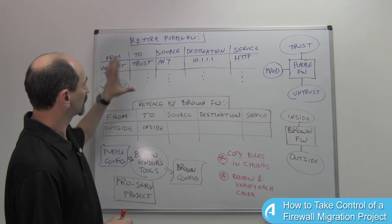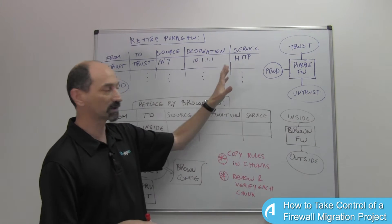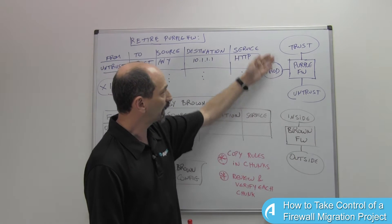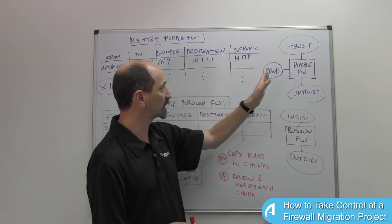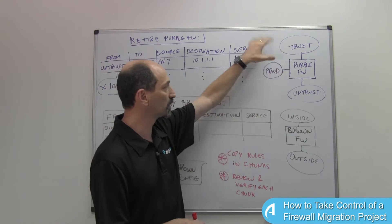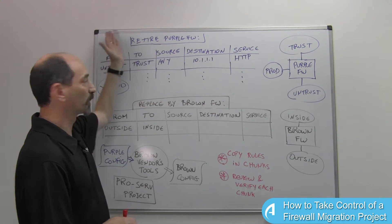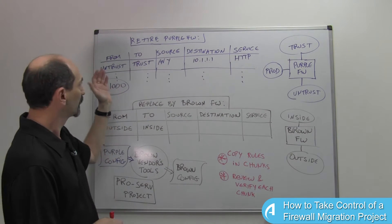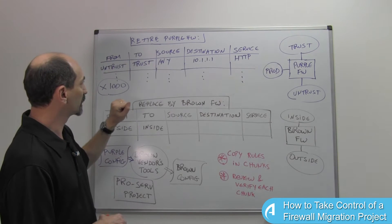Let's take a look at this purple firewall. If we look at the topology of that purple firewall, you can see that perhaps it has three interfaces: there's a trust side, an untrust side, and a prod side. These are the names of the zones behind these firewalls. And the rules on the purple firewall, which you have a few thousand of, rely on these zones.